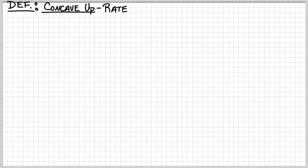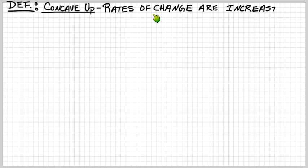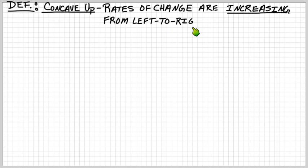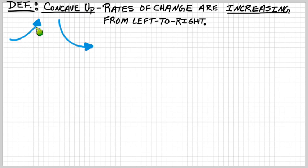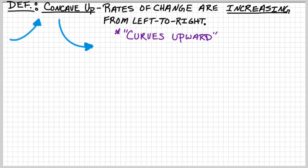Let's get a little more formal with our definition for concave up and concave down. For the concave up graph, it has this trait: the rates of change at points on the graph are increasing from left to right. Think back to what rates of change are — those are just slopes. So if you're picking points on the graph, the slopes are increasing from left to right. That's for concave up — the smiley face, the one that holds water. You could say it curves upward, or it bends, or it cups upward.